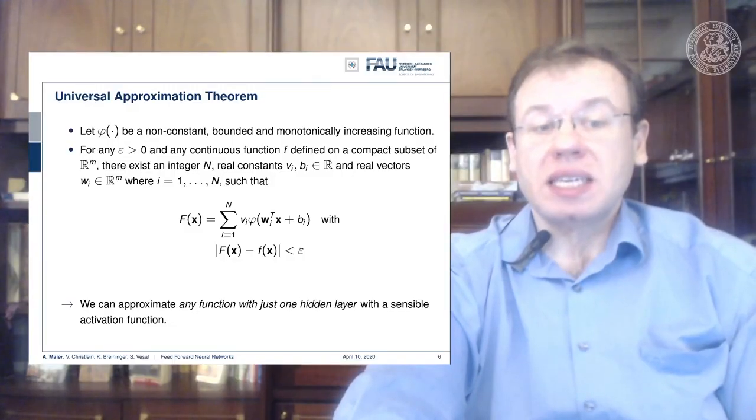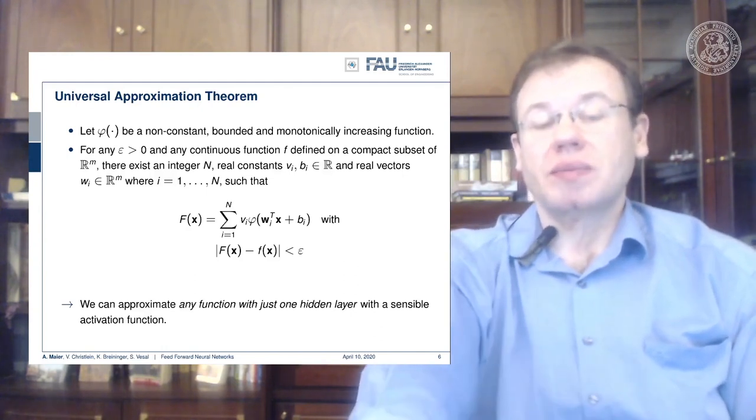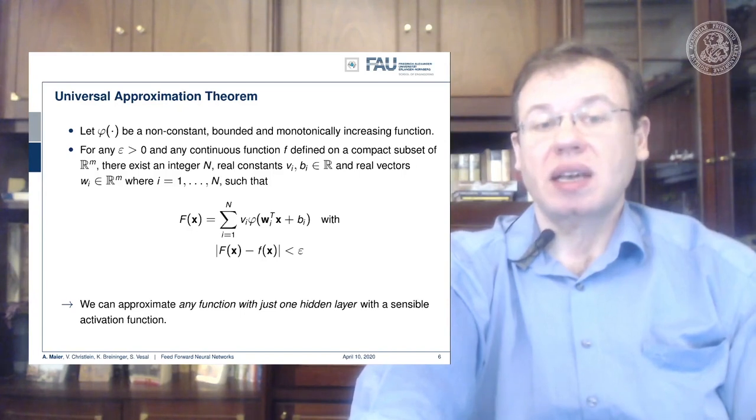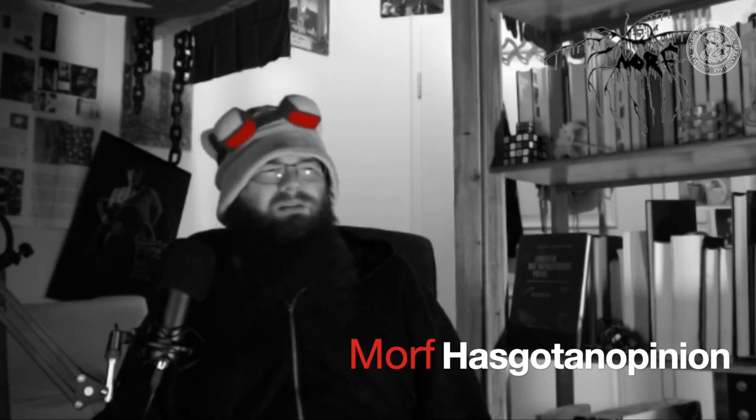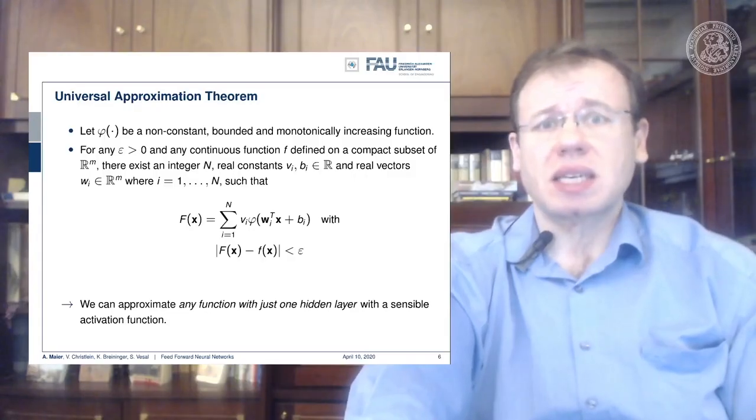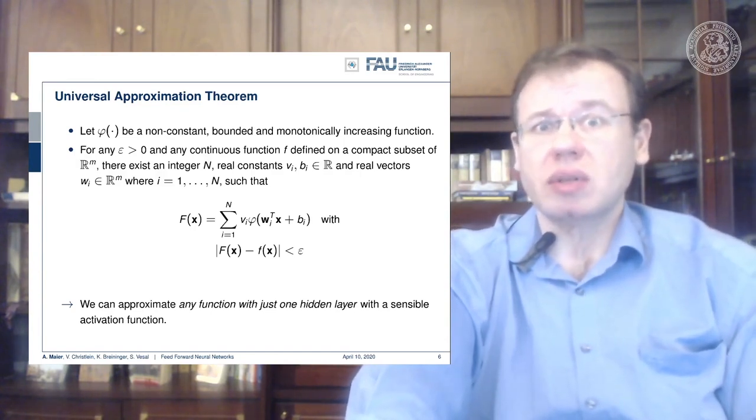So this means we can approximate any function with just one hidden layer. You could argue if you can approximate everything with a single layer, why the hell are people doing deep learning? This doesn't make any sense. A single layer is enough. I've just proved this to you. So there's maybe no need for deep learning.